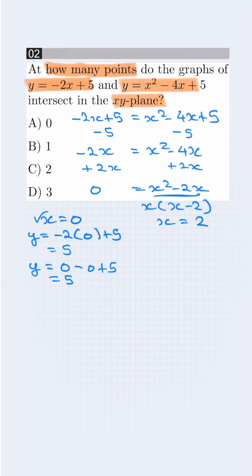Now, we try for x is equal to 2. So, putting it in the first equation, it will be -2 into 2 + 5 is equal to 1. Now, for the second equation, y is equal to 4 - 8 + 5, which is 1. x is equal to 2 is also our correct x value.